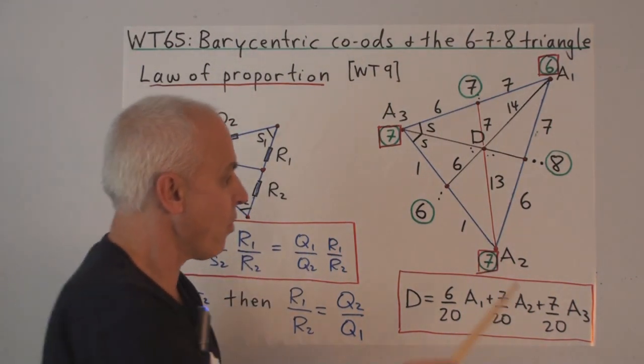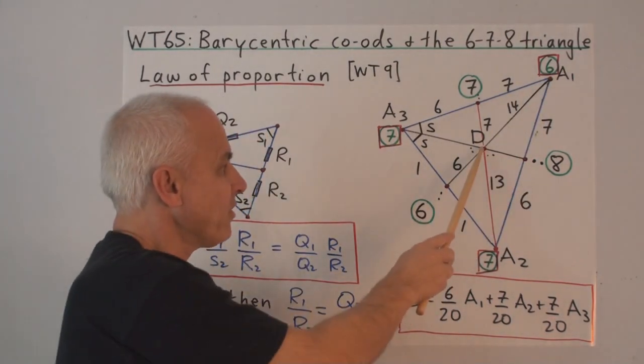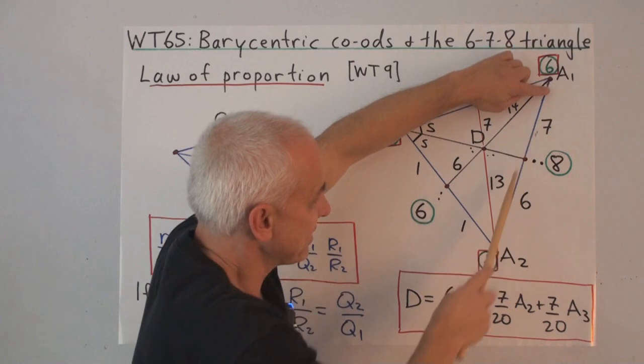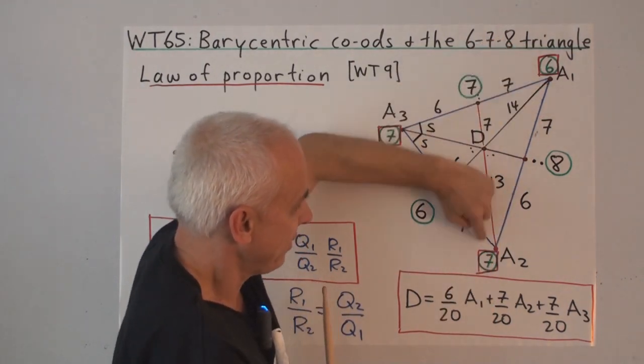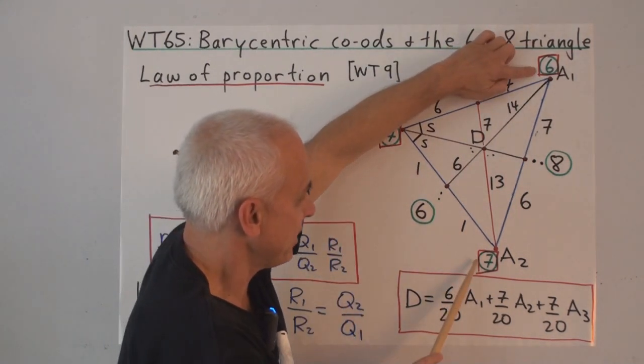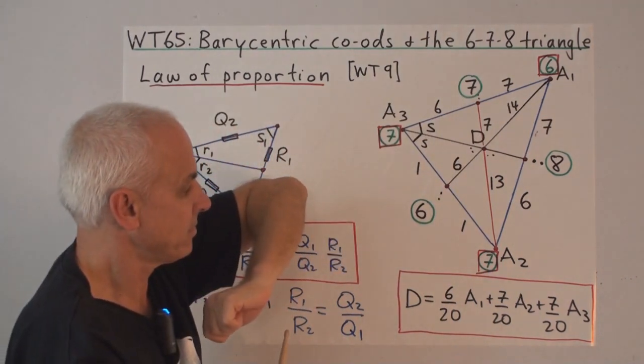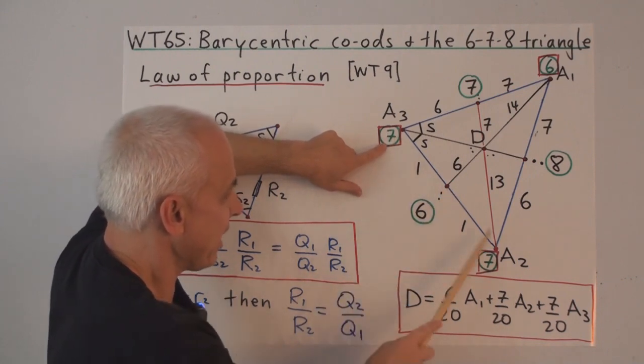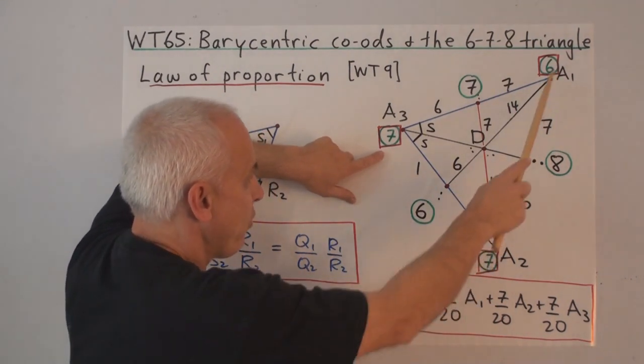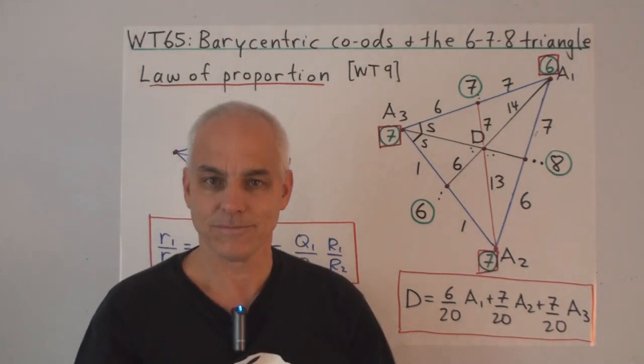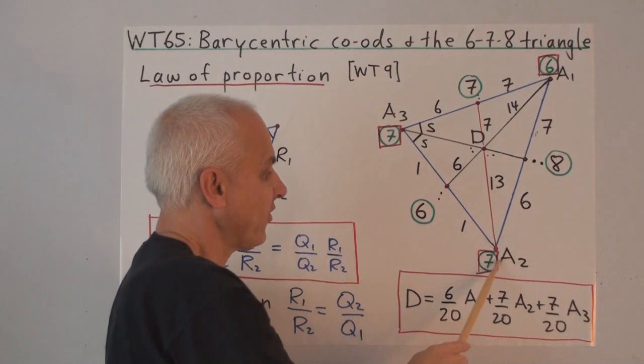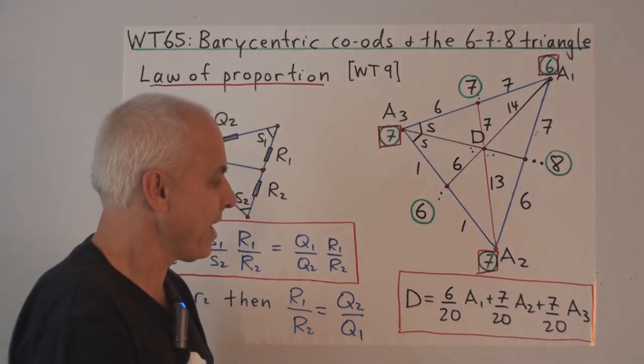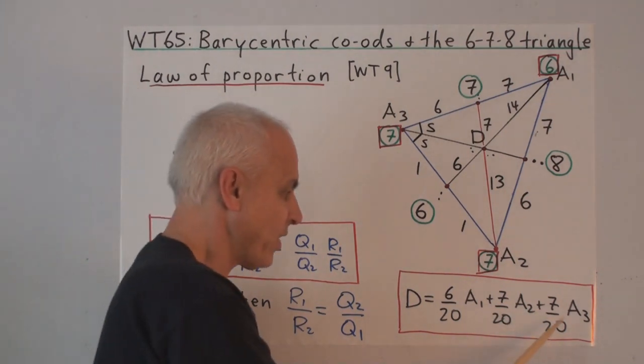Well, the simplest way is to imagine putting weights on the vertices so that this is the point of balance. To do that, if we put a weight of 7 here and a weight of 6 here, then on this side this will be a point of balance. Because 6 times 7 is 7 times 6. So let's do that. Put 6 here and 7 here, then this side will balance right at that point there. And we'll also put a weight of 7 here so that this side balances at the midpoint. So this is a point of balance of this side. And this is a point of balance of this side. And that means that this point where they meet is the center of balance of the triangle. And now the three weights are 7, 6, and 7. And the barycenter coordinates of D are then 6/20 of A1 plus 7/20 of A2 plus 7/20 of A3.